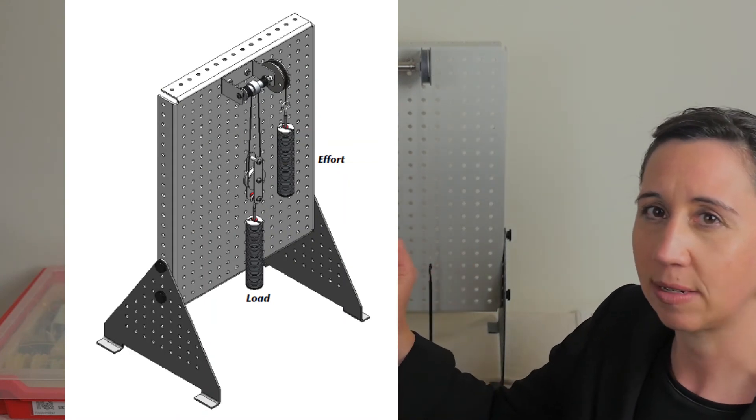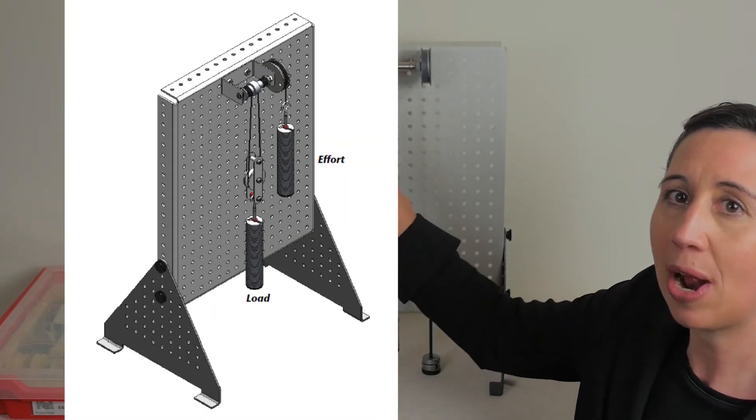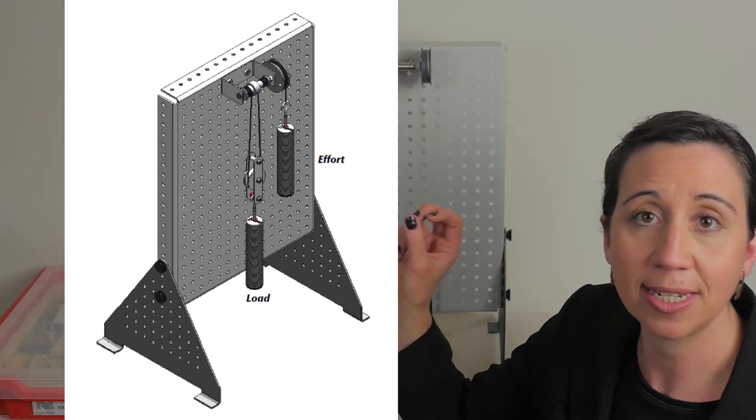Before we are done with this part of the kit, I mentioned differential axles at the beginning. Let's look at this now. This is where we use both the axles and wrap this cord around both in opposite directions.